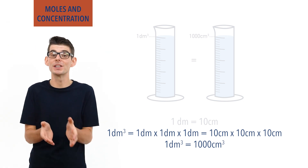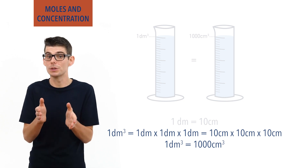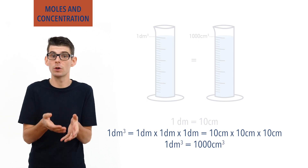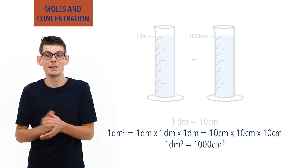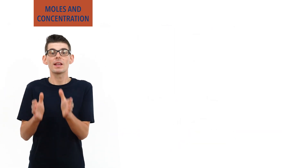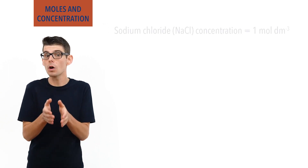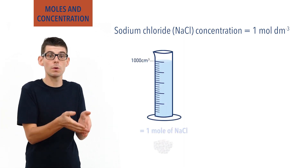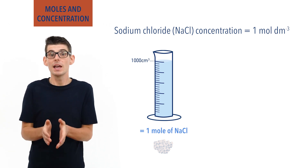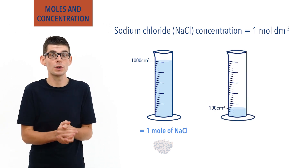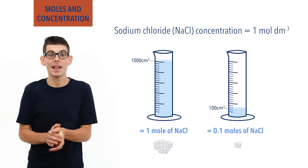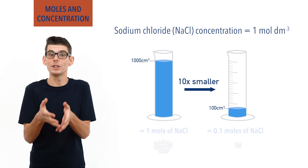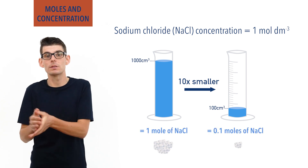Being able to convert between decimetres cubed and centimetres cubed is important, as very often small volumes of solutions are used in chemistry, and it is simply more practical to measure these in centimetres cubed. This means that if a solution of sodium chloride has a concentration of 1 mol/dm³, a 1000 cm³ sample will contain 1 mole of sodium chloride. Equally, a 100 cm³ sample will contain 0.1 moles, as 100 cm³ is 10 times smaller than 1000 cm³.